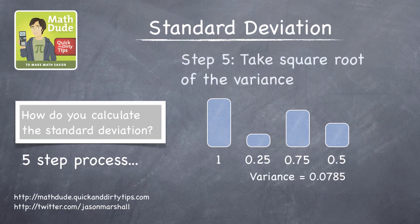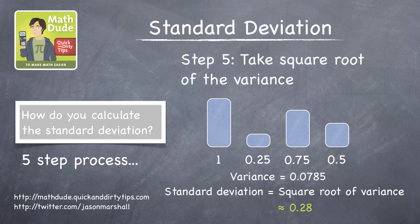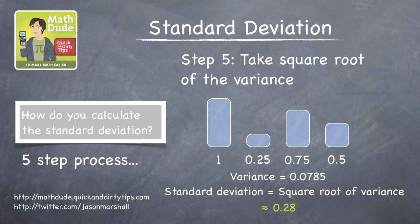Finally, the standard deviation is just the square root of the variance, so it's 0.28.